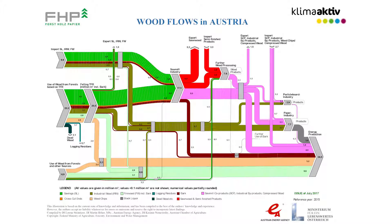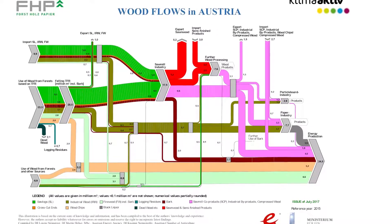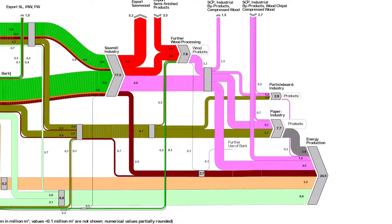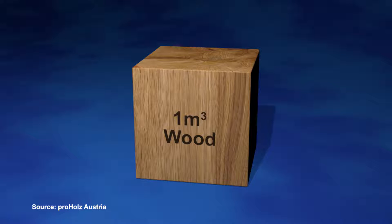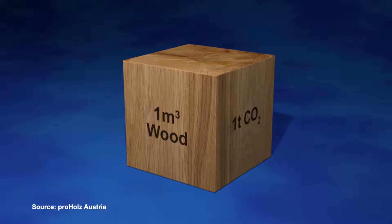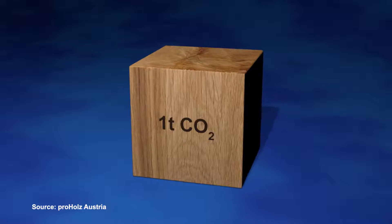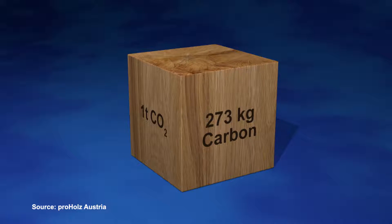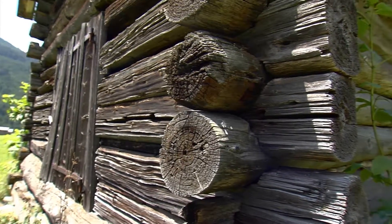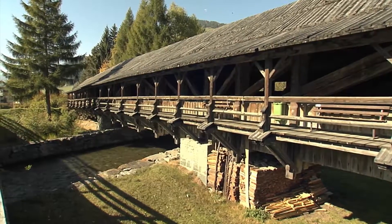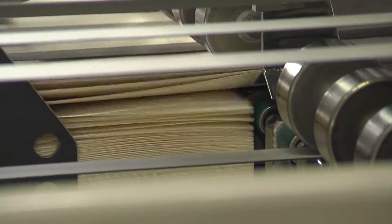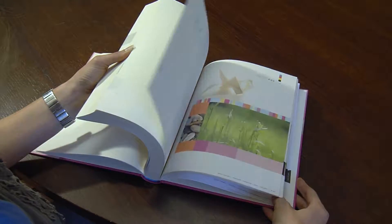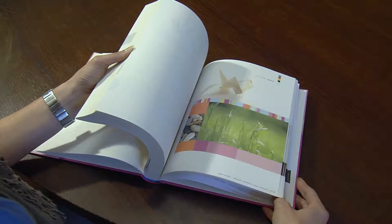The wood flow graph shows the different usage patterns of wood processed in Austria — 100% of it is used in the creation of wood products, paper, and energy. Especially when wood is used as construction material, a lot of carbon is bound, because one cubic meter of wood stores about one ton of CO2, or 273 kilograms of carbon. The usage of long-living wood products as a substitute for climate-intensive resources such as concrete, synthetic material, or crude oil, as well as the multiple uses of the raw material wood, are crucial for active and sustainable climate protection.